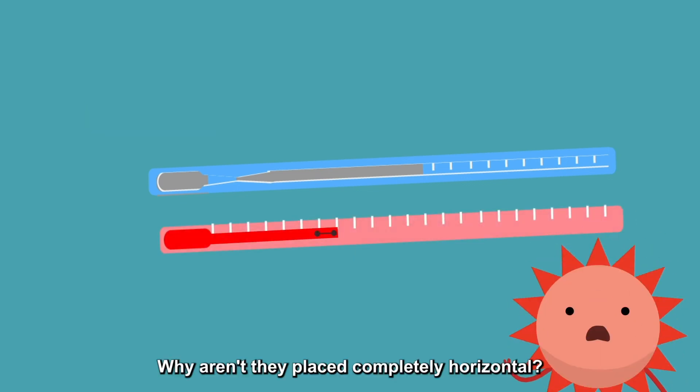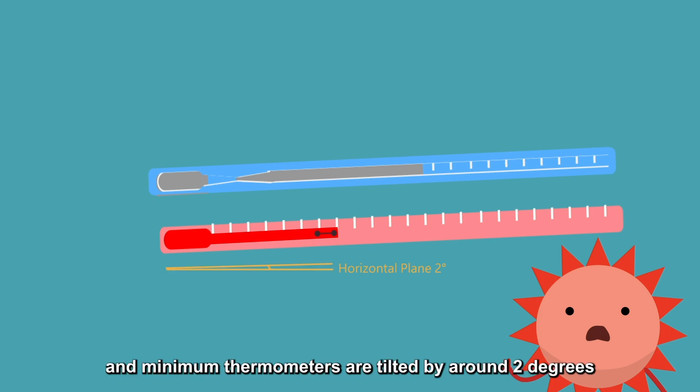Why aren't they placed completely horizontal? Generally, the placement of the maximum and minimum thermometers are tilted by around 2 degrees. This can prevent the mercury inside the bulb at the end of the maximum thermometer from overflowing the narrow passage. The alcohol in the minimum thermometer can move the index easier, too.